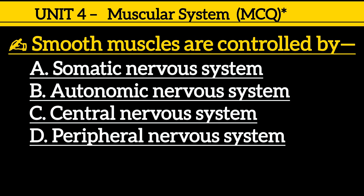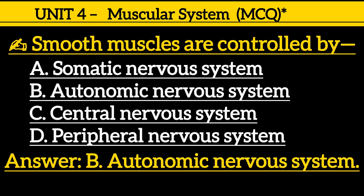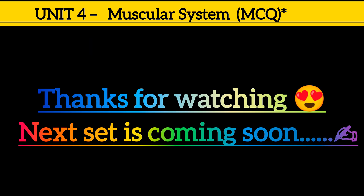Next one is: smooth muscles are controlled by — option A: somatic nervous system, option B: autonomic nervous system, option C: central nervous system, option D: peripheral nervous system. Correct answer is option B, autonomic nervous system.